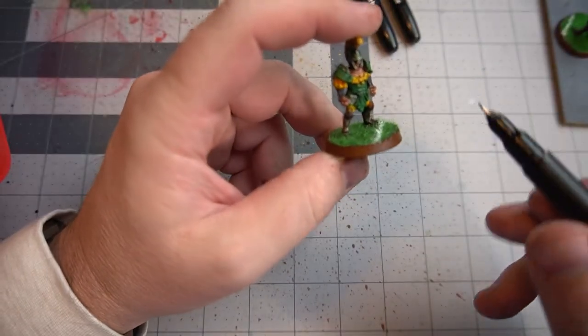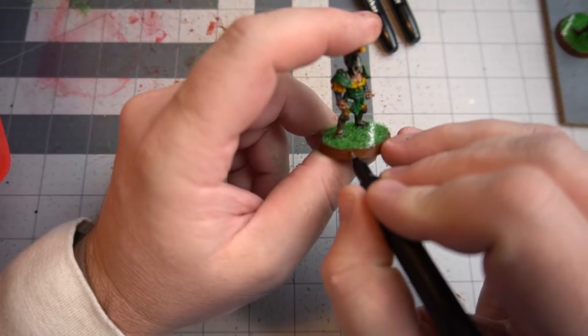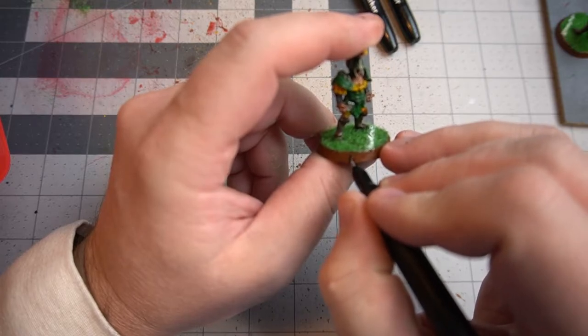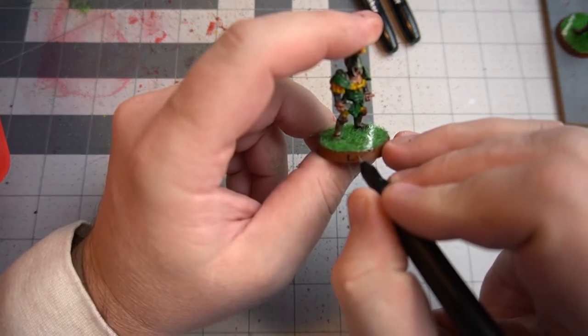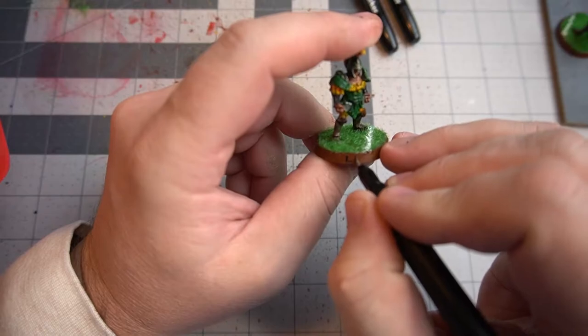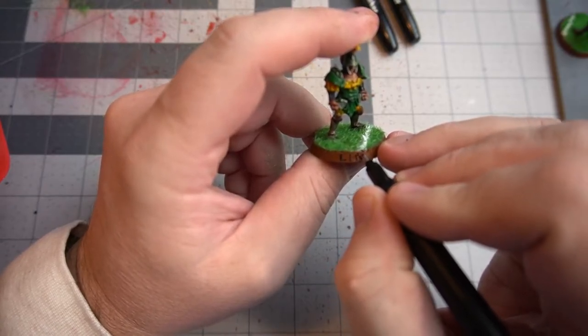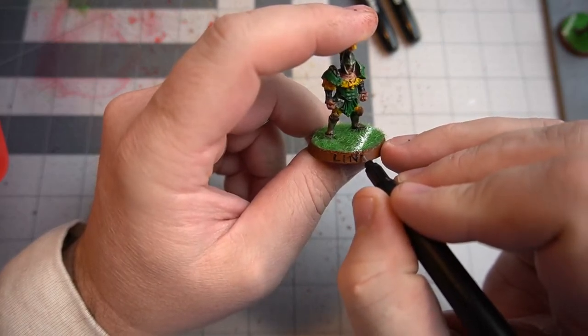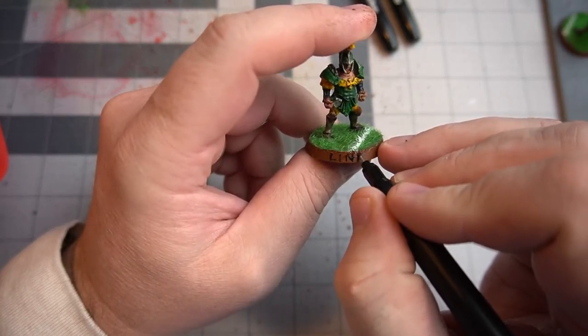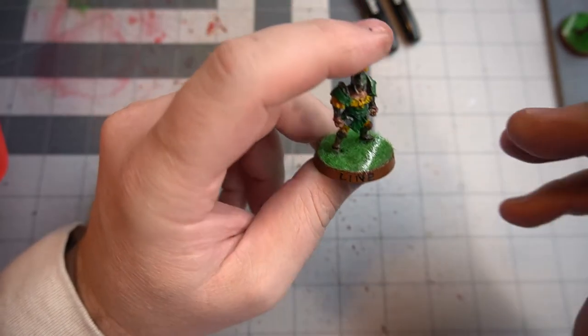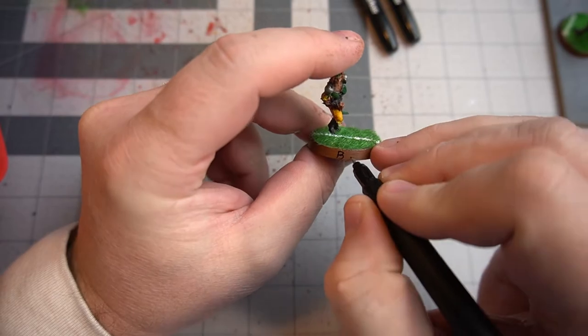Then I'm going in and labeling each one of them. So this one is a lineman, so I'm just putting line. Easier for me to do this with a felt pen than trying to do it with a paintbrush.